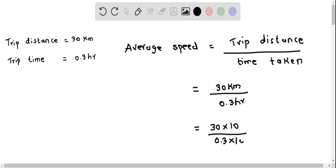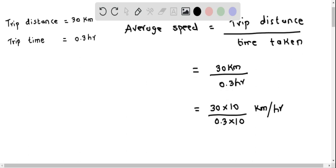So therefore this becomes like this. We have the unit kilometer per hour. 30 times 10 is 300, and 0.3 times 10 is 3.